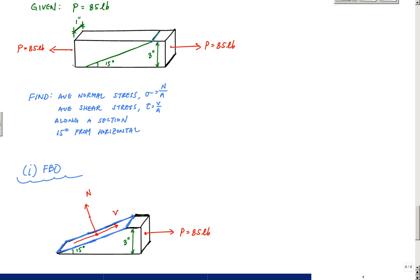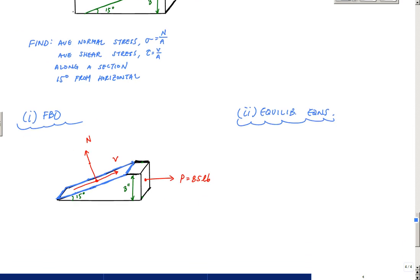So that moment would be zero if I apply an equilibrium equation. And so now I have this internal loading, and I only have two internal loads, the normal force and the shear, which I have to calculate using equilibrium equations, something you've been doing since maybe physics.